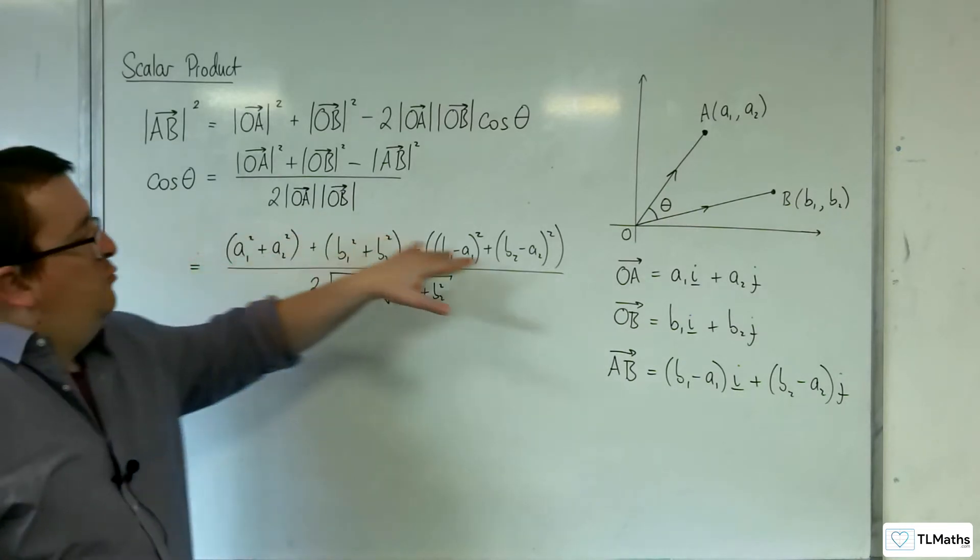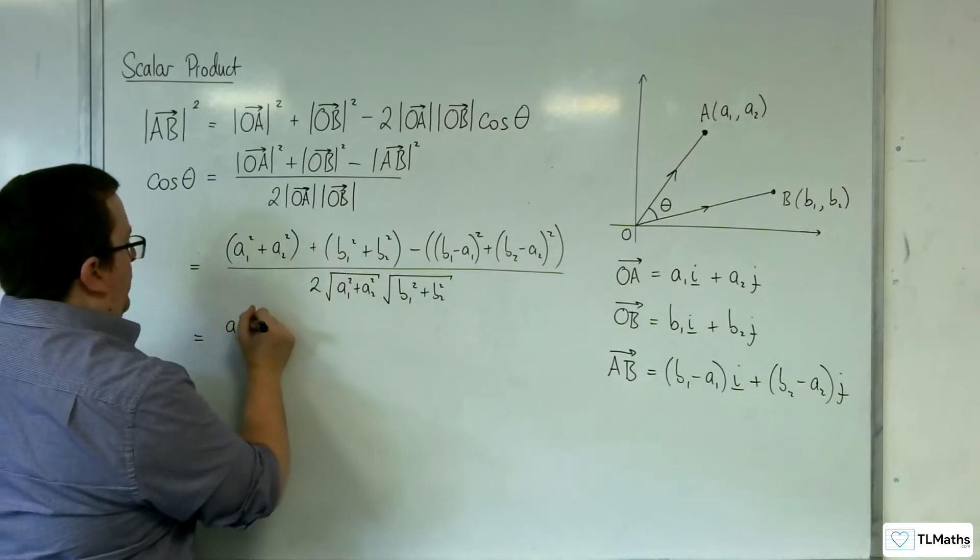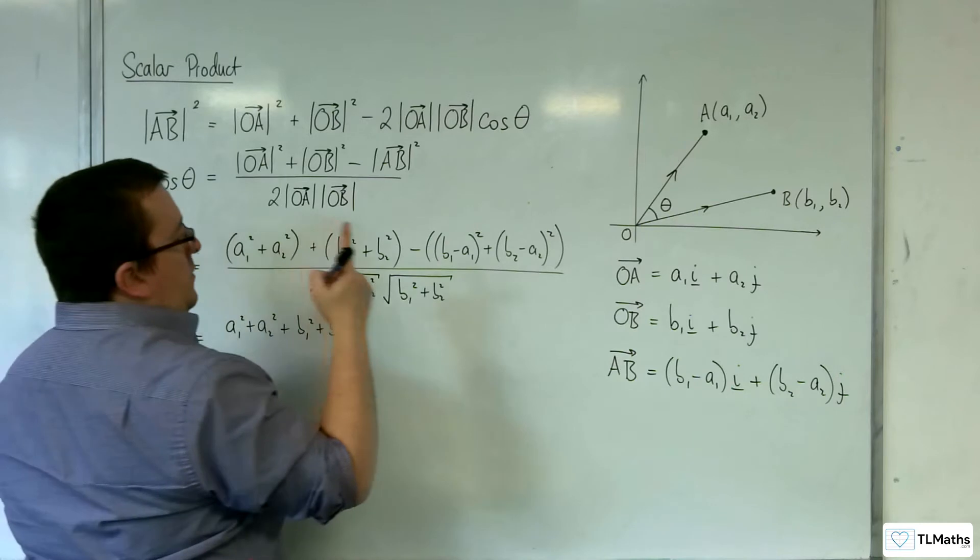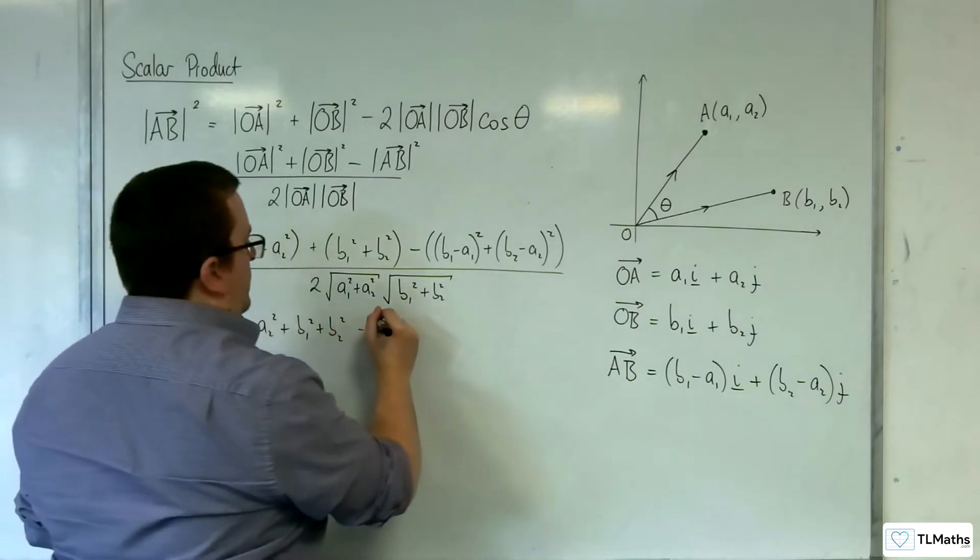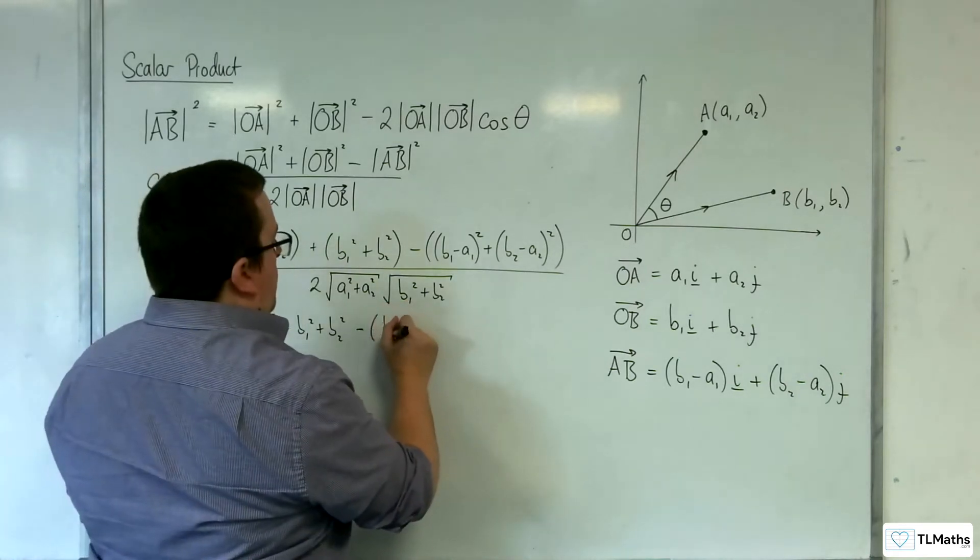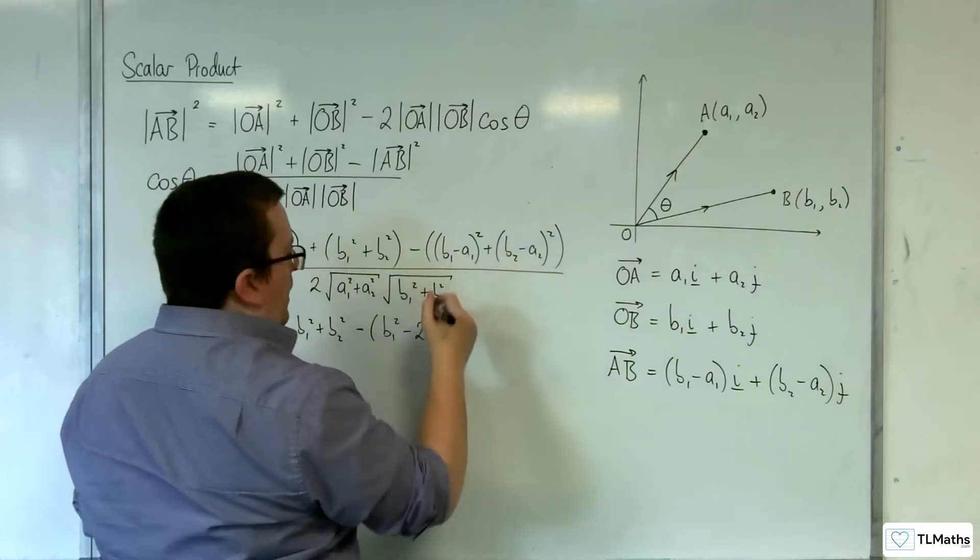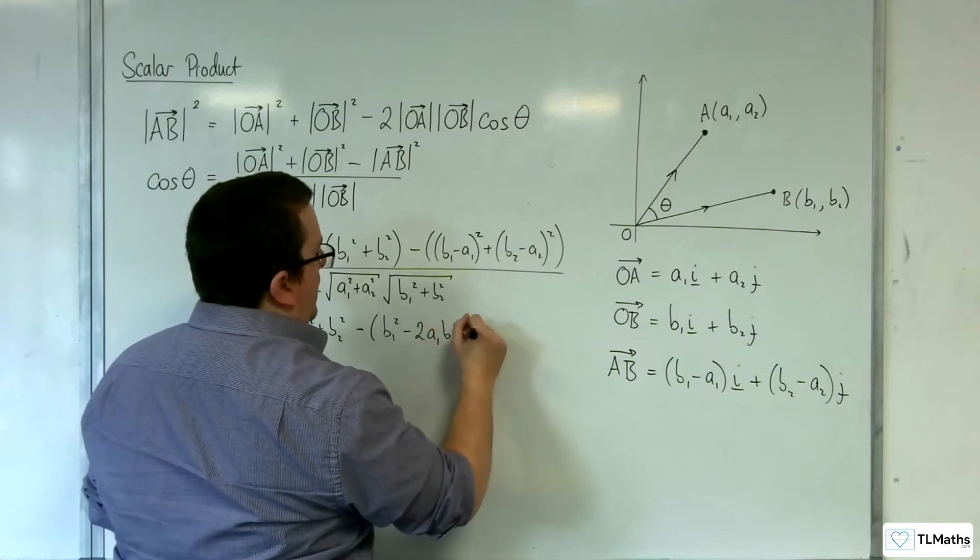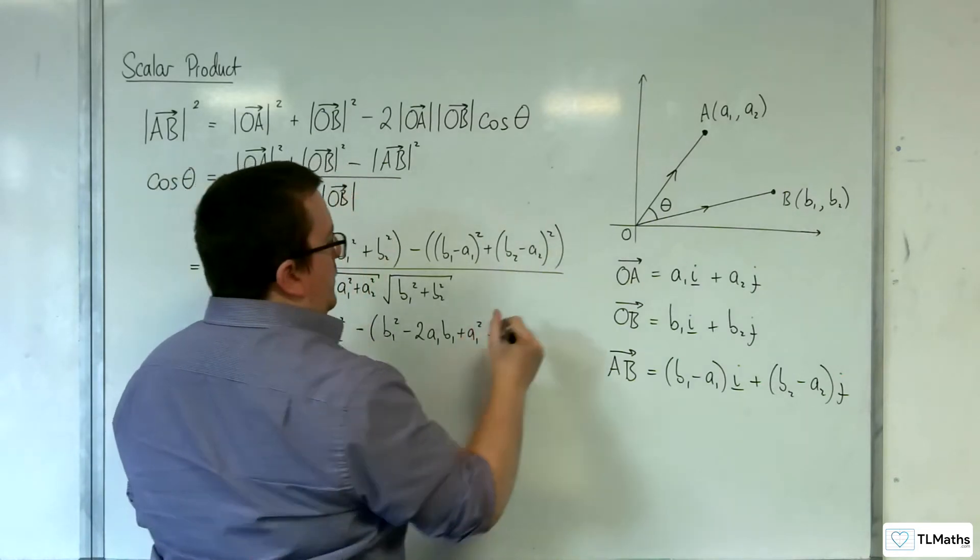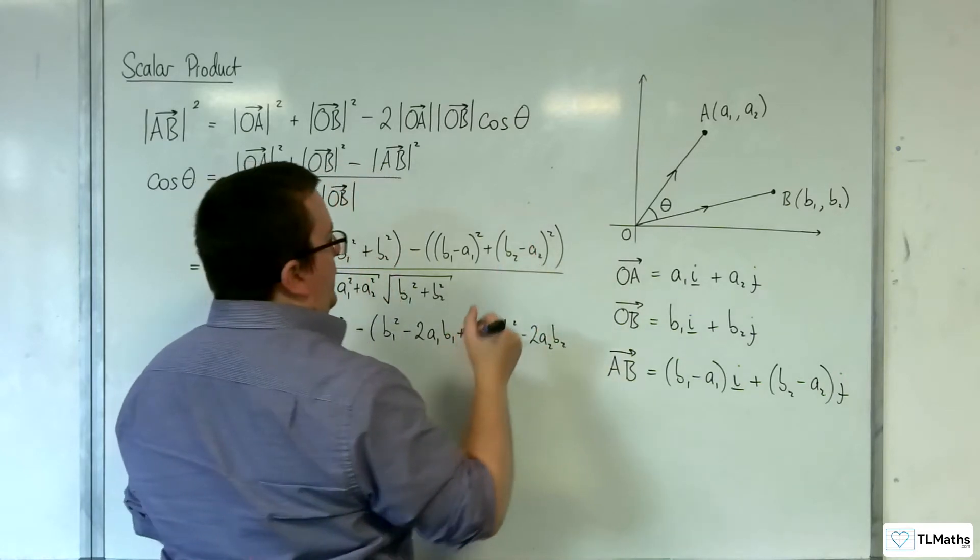So the numerator I want to expand out. So at the moment I've got A1 squared plus A2 squared plus B1 squared plus B2 squared from those two brackets. Then I'm putting a takeaway sign first and then opening up a bigger bracket. So I will get B1 squared take away two lots of A1 times B1 plus A1 squared plus B2 squared, take away two lots of A2 times B2 plus A2 squared.